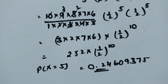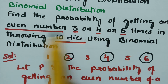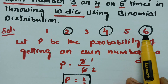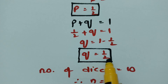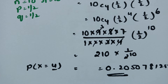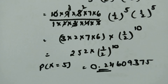To summarize: p = 3/6 = 1/2, q = 1/2, n = 10. The probability of getting an even number exactly 3 times is 0.1171, for 4 times is 0.2050, and for 5 times is 0.24609375. Tomorrow we'll be starting the Poisson distribution — those problems are also very important. Please share this video with friends and subscribe to the channel. Thank you.